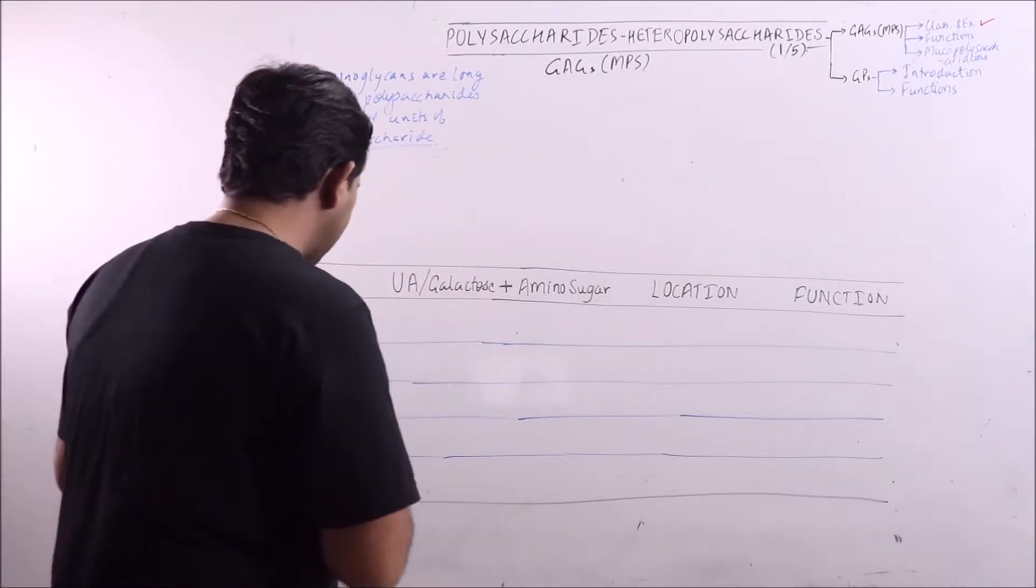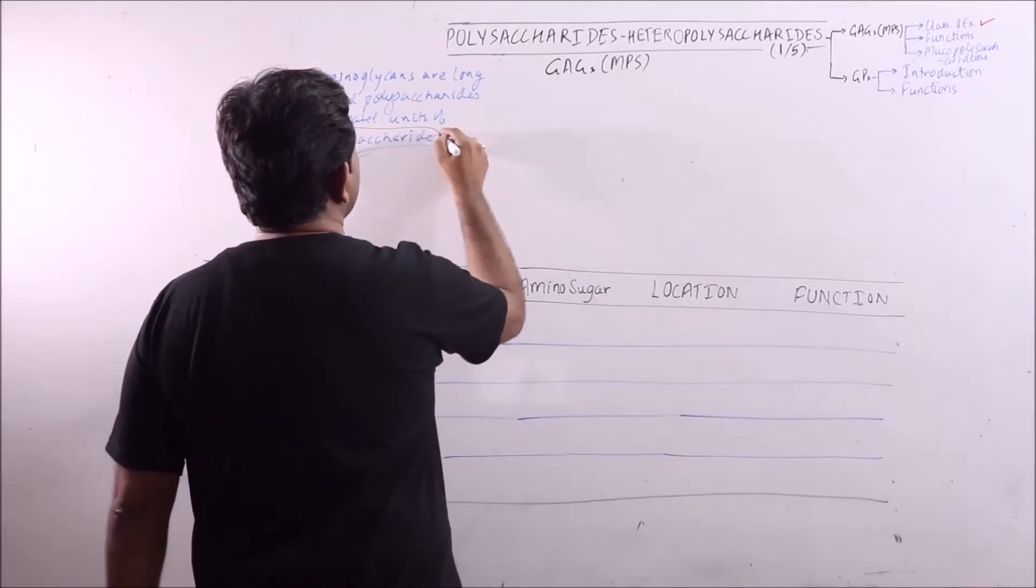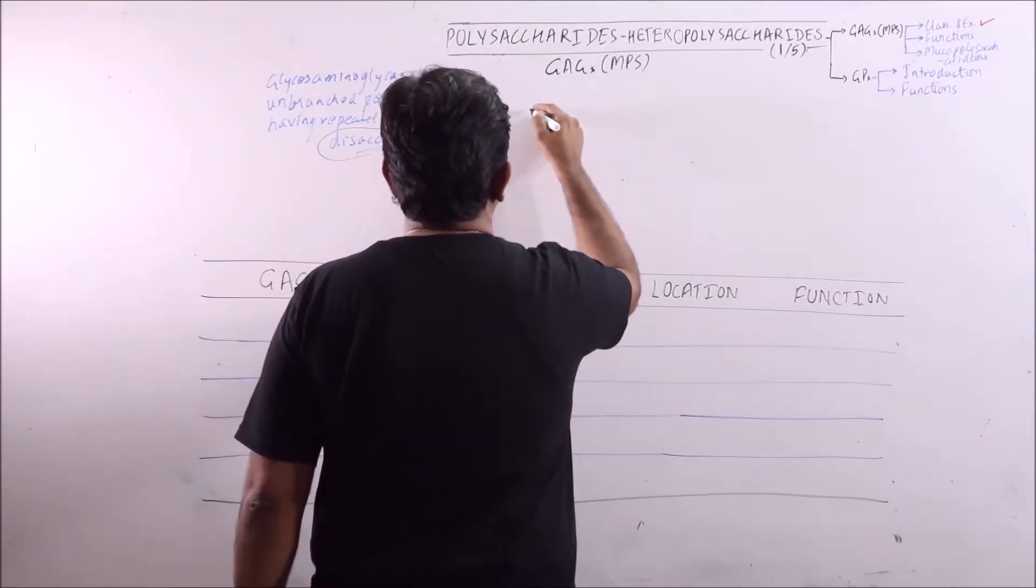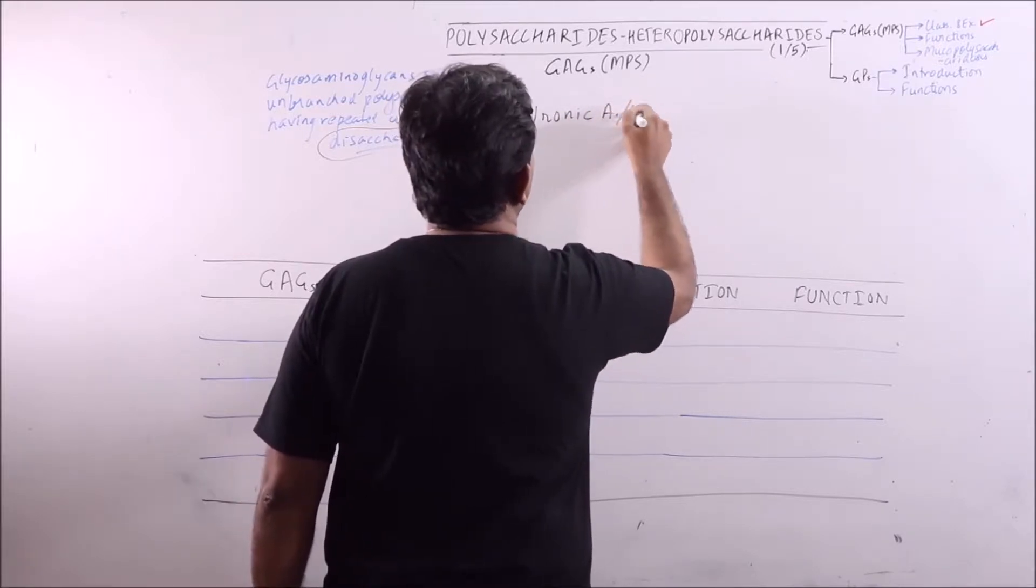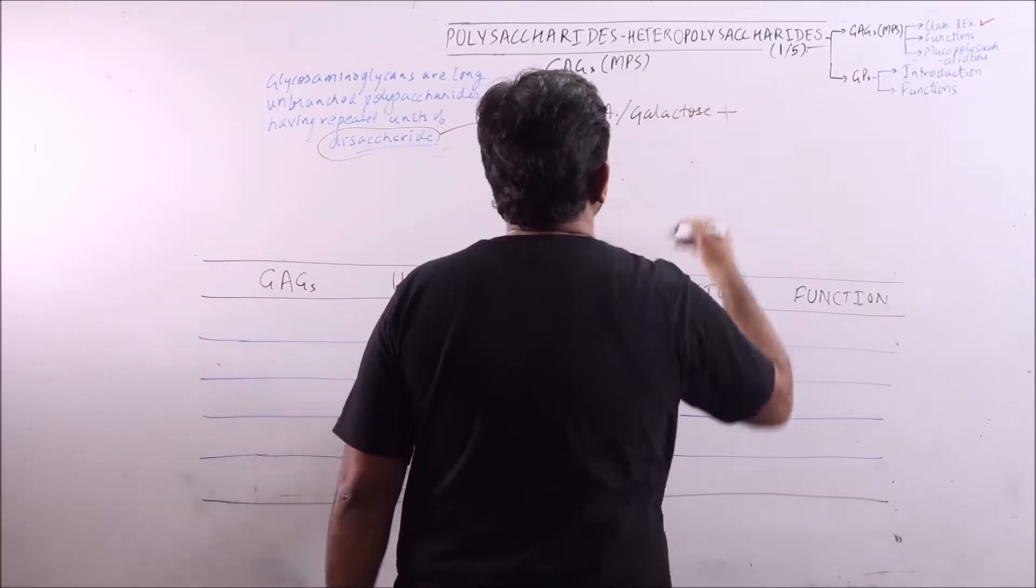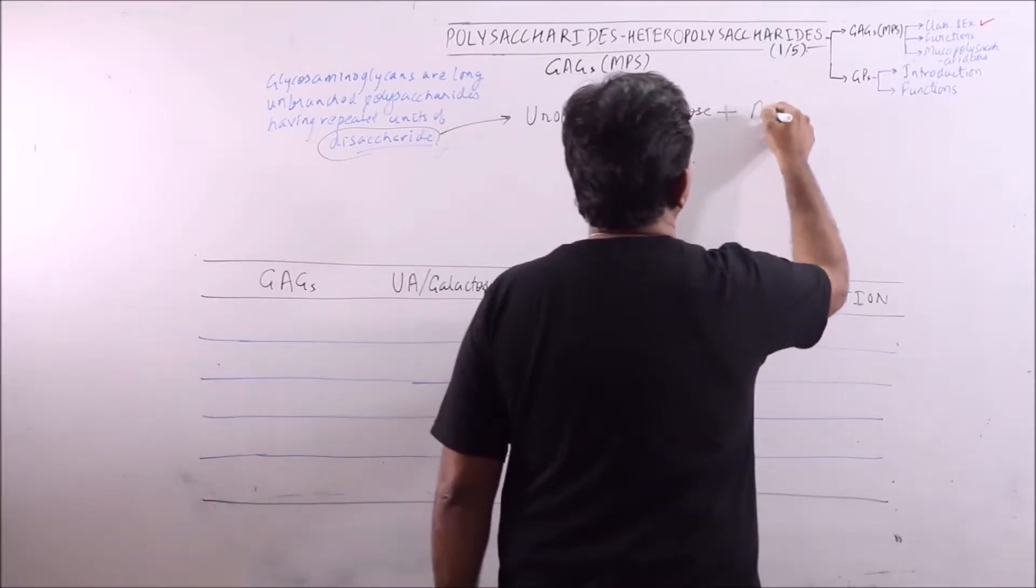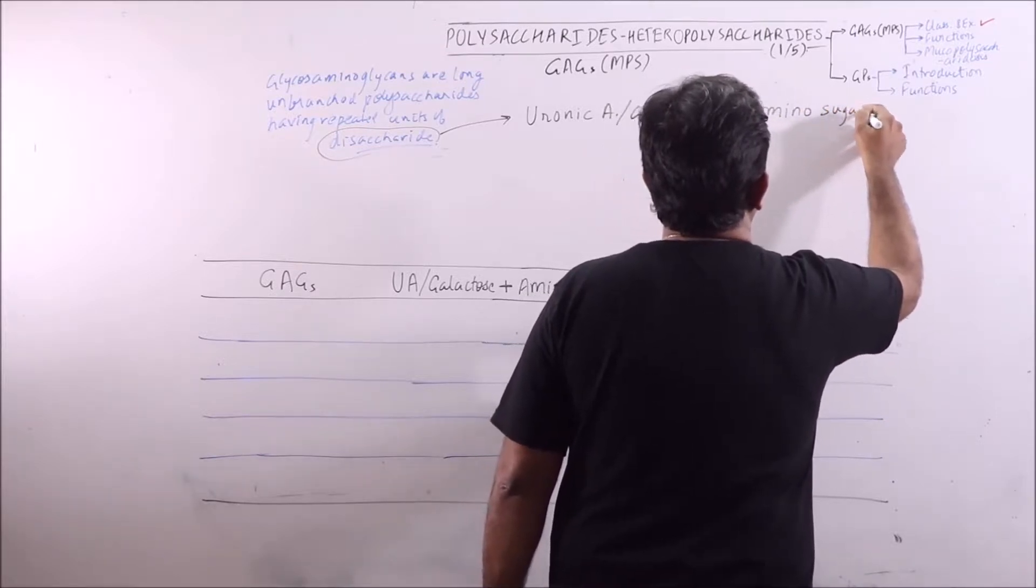Now this disaccharide is having one unit either of uronic acid or galactose and the second one is an amino sugar.